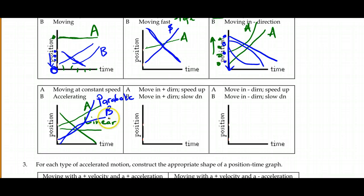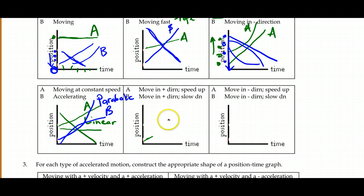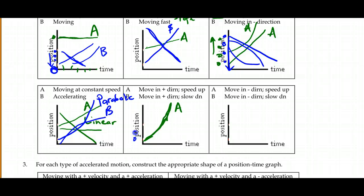Moving in the positive direction and speeding up: to get faster, the slopes have to get steeper, giving us a steepening curve. Moving in the positive direction and slowing down: the spaces between position points get closer together for equal time intervals, so the slope starts steep but becomes much more shallow — indicating we slowed down.